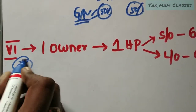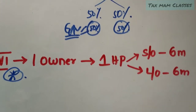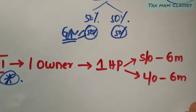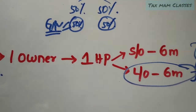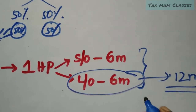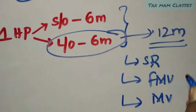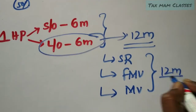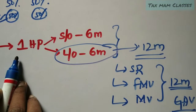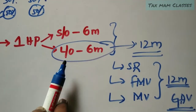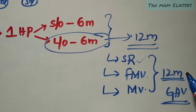The sixth situation is also important from an exam perspective. One owner has one house property, but it is self-occupied for only six months and let out for the rest. In this case, we assume that the property is let out for the full 12 months. The standard rent, fair market value, and municipal value are all taken for 12 months to calculate the gross annual value.